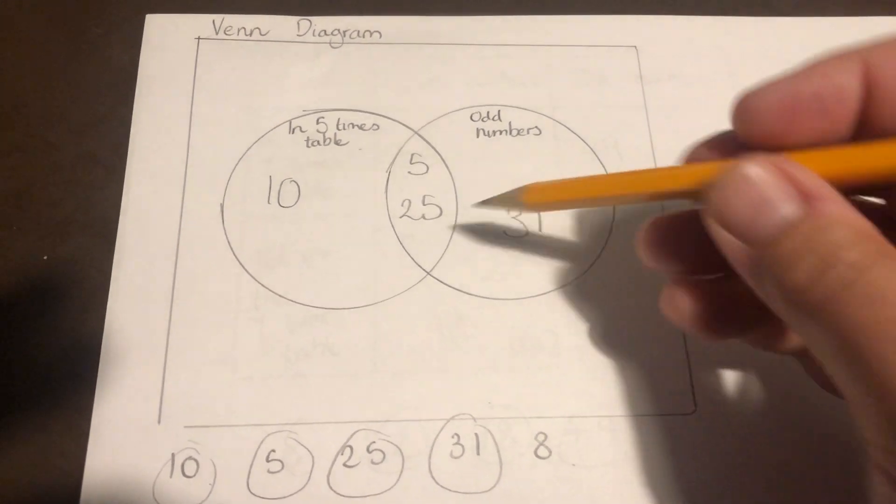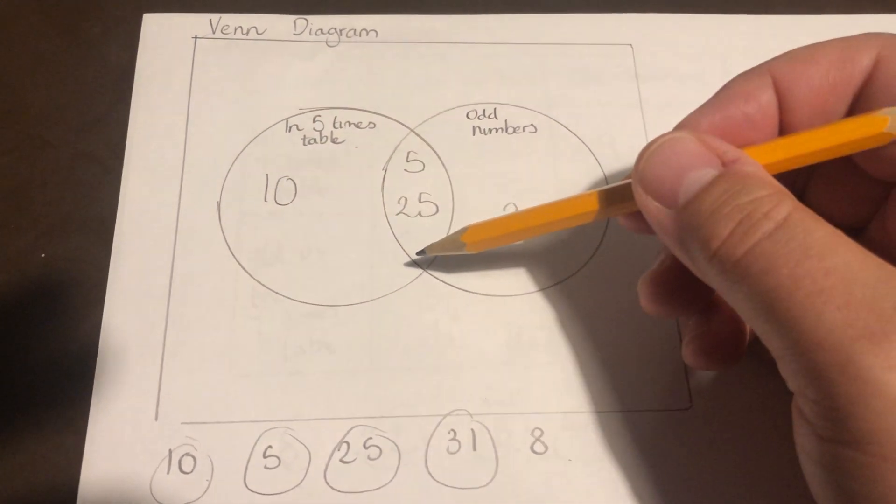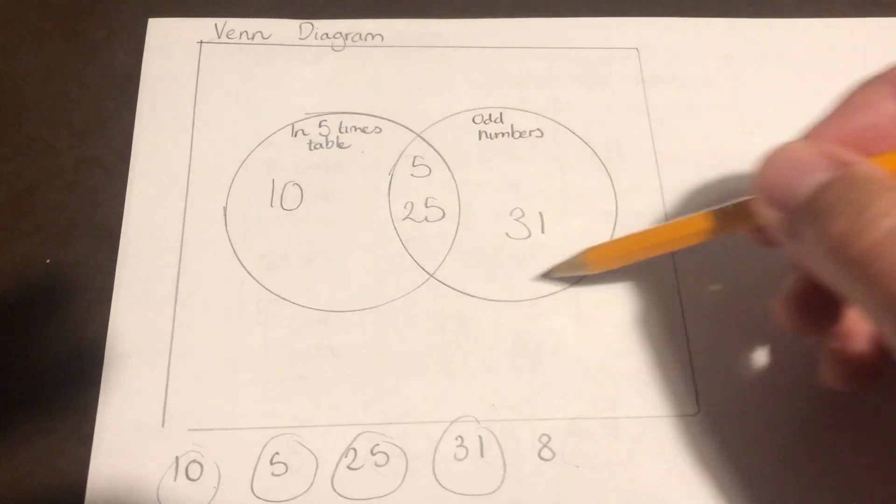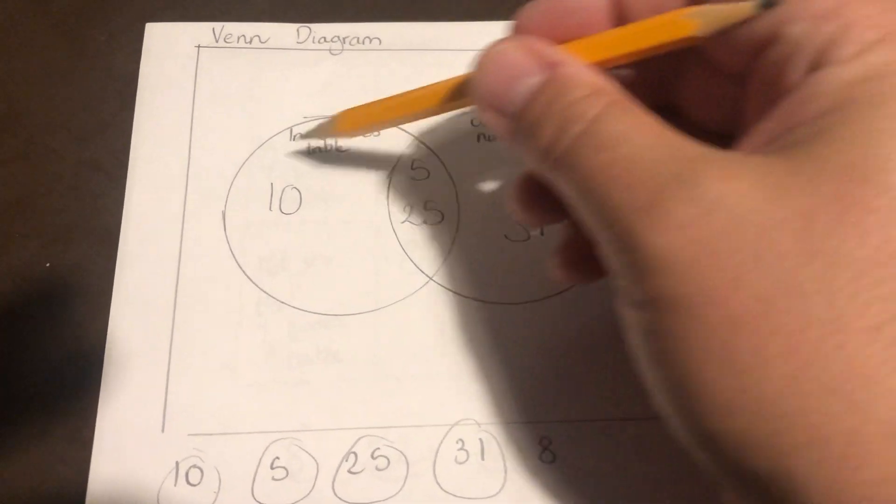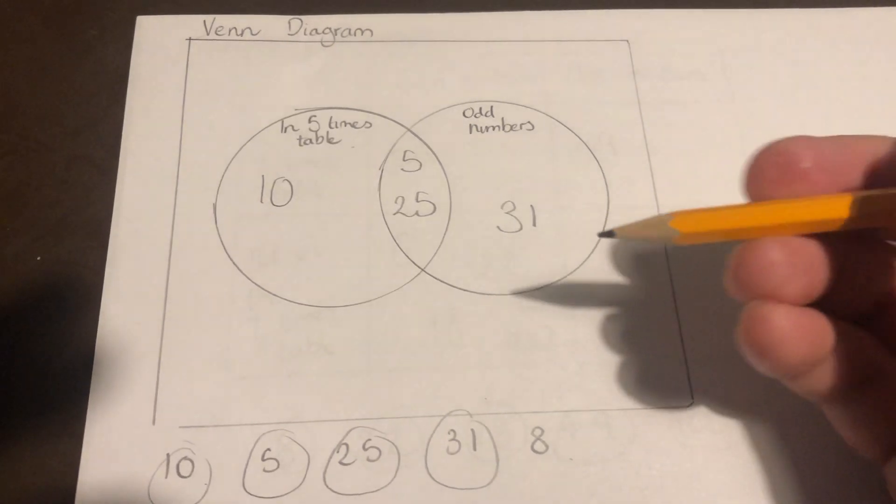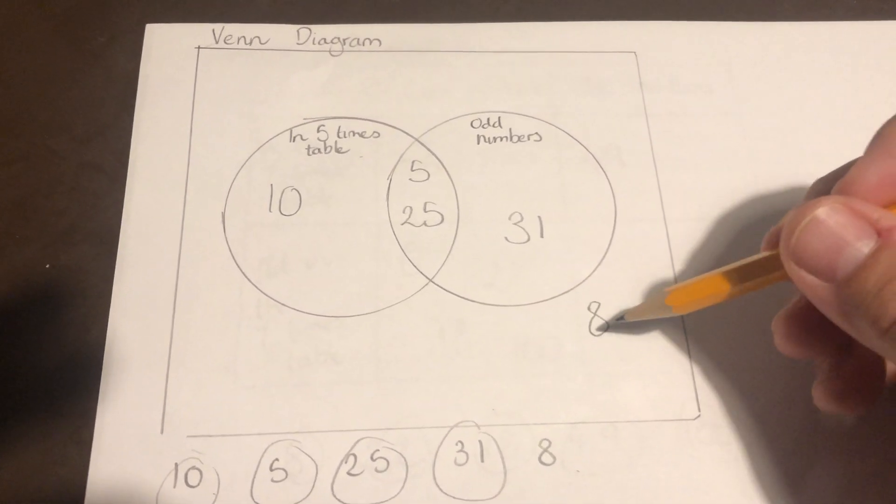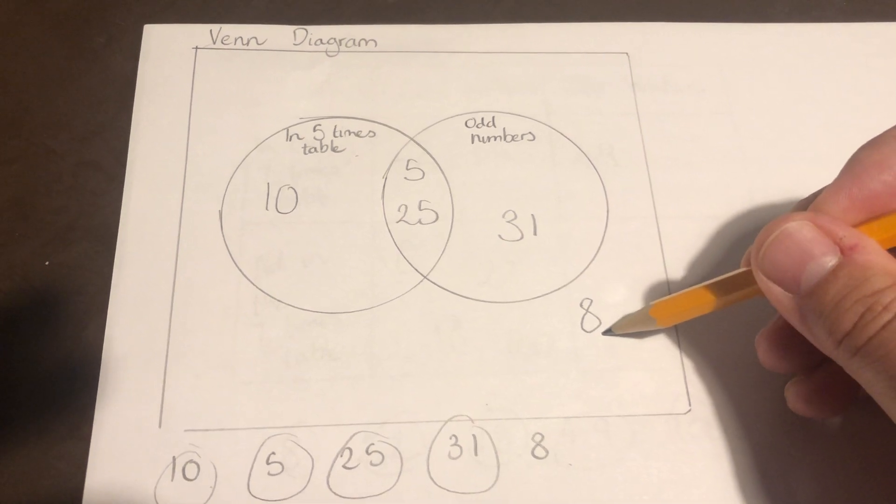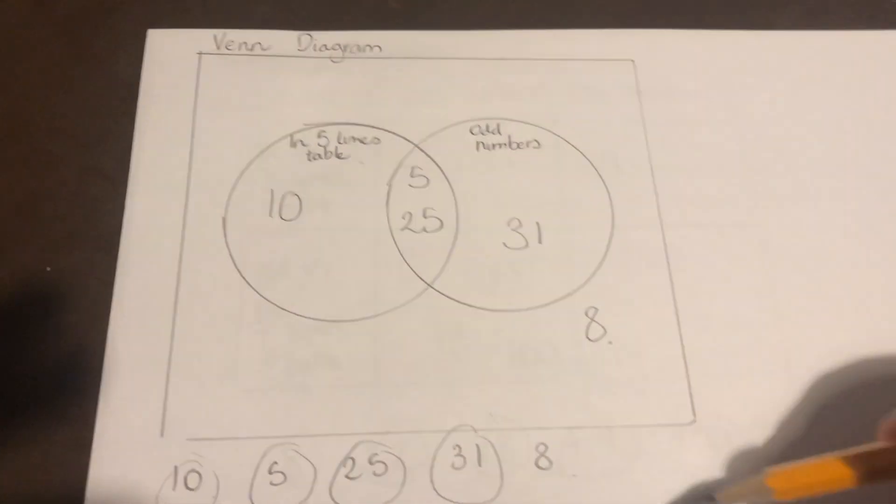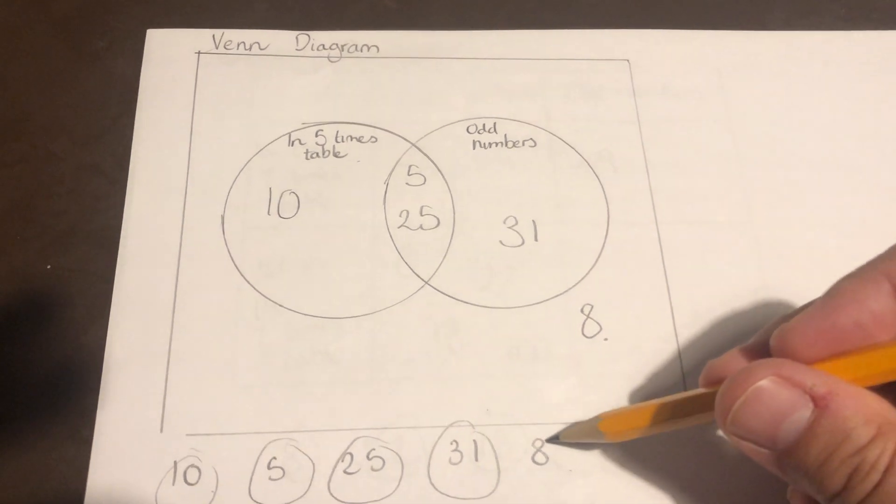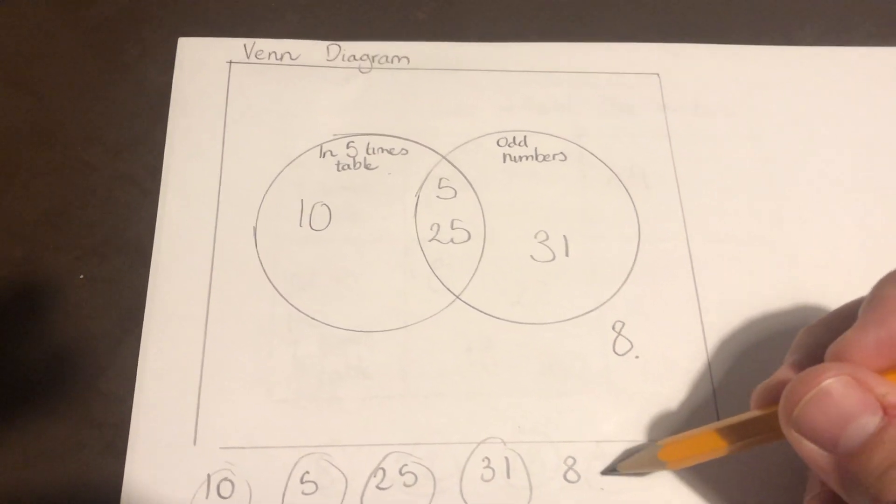And 8, well, it's not in the five times table, and it's not an odd number, so it can't go in this circle. It can't go in that circle, so we're not going to ignore it. We're going to pop it outside of the box, and that says that we know that this is in our list of numbers, but it doesn't fit in our Venn diagram, it doesn't fit in any of our circles. So that's our first Venn diagram.